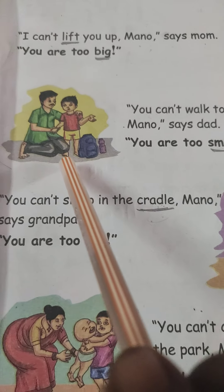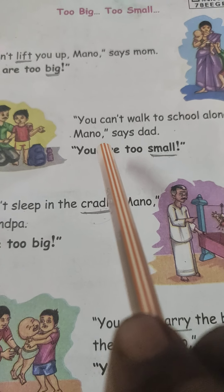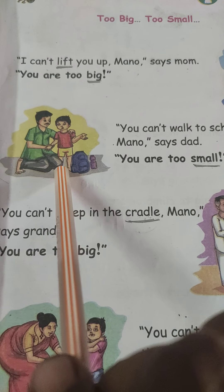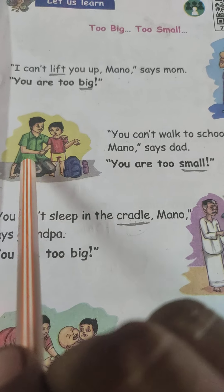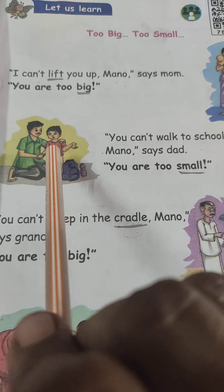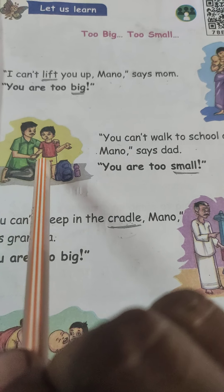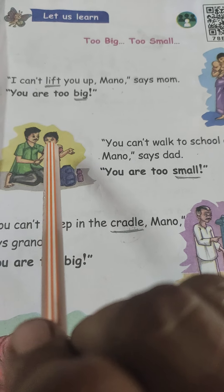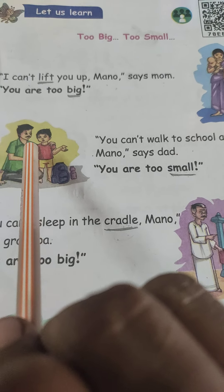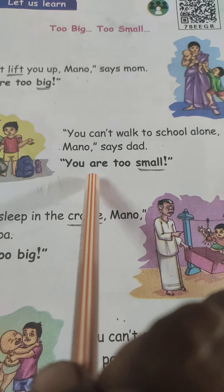Next one is the conversation between father and Mano. You can't walk to school alone. Mano says, dad, you are too small. Father or mother will drop you, because you are very small, not able to come to school alone. So that is why father is saying: you can't walk to school alone. Mano says dad, you are too small.